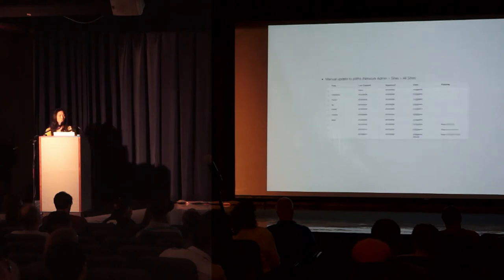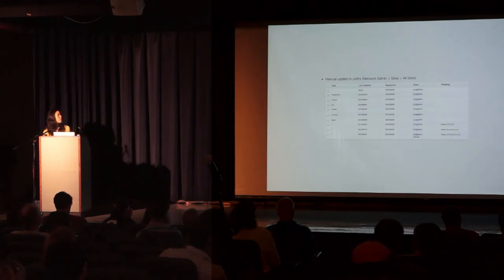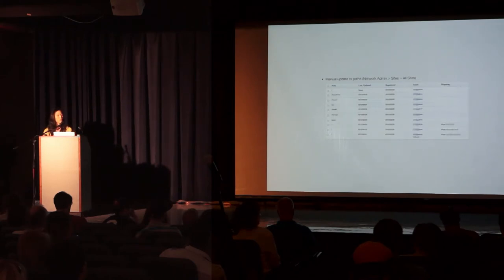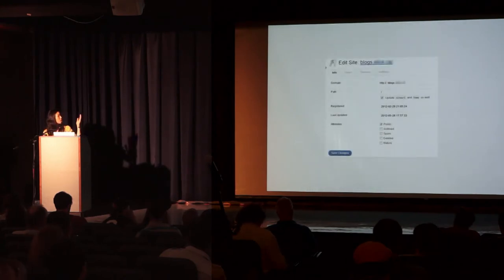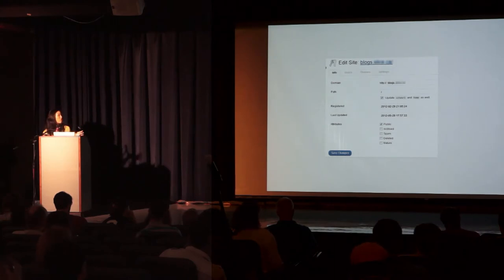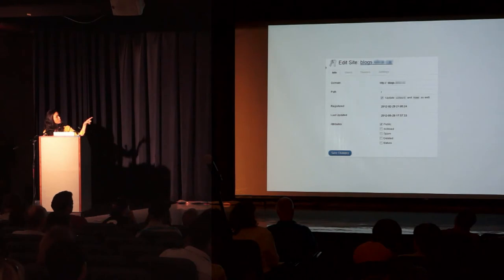Once all domains are set, check that all paths are configured correctly — some you have to update manually via Network Admin > Sites > All Sites. For our sub-directory blogs, paths were set up correctly, but for the sub-domain ones we had to modify them manually. Make sure domains are set up correctly; in our case we registered domains as blogs.domainname. The path is just a slash. When you check and update the site URL and home URL, it automatically updates those for you under the Settings tab.